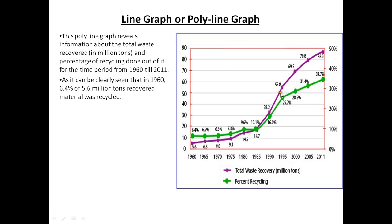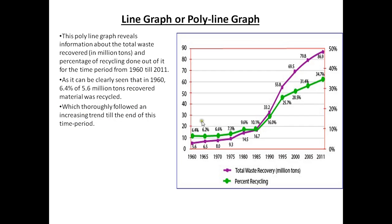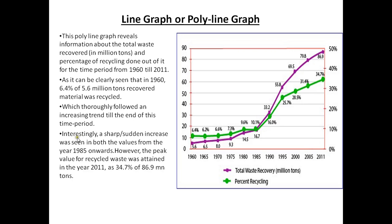After that initial year, a sudden increase was seen in both values. The recovered material and recycled percentage both attained their peak values by the final year, following a strong increasing trend throughout. You can say: 'which thoroughly followed an increasing trend.' Then use a neutral connector like 'interestingly' — 'Interestingly, a sharp or sudden increase was seen in both values from the year 1985 onwards.'